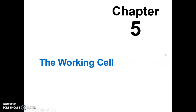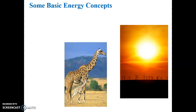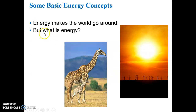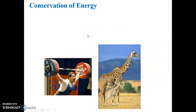Chapter five: the working cell. Let's start out with some basic energy concepts. Energy makes the world go around in the sense that living things have to be able to utilize or assimilate energy — or process food, for example — to be able to harness energy. But what is it exactly?